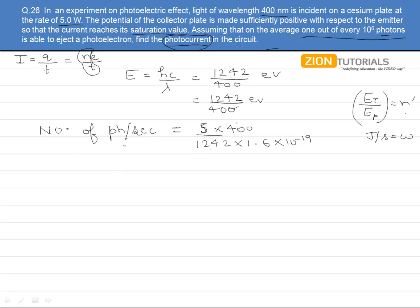This is basically the rate at which the photons are incident on the metal or the emitter actually. If this is the rate of the photons, that is this number of photons are actually incident per second.